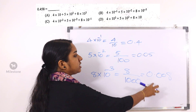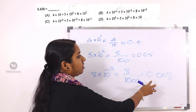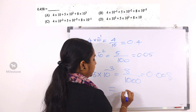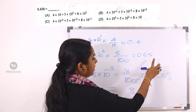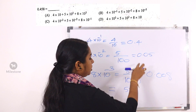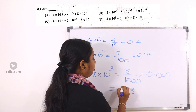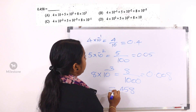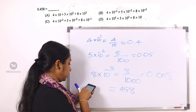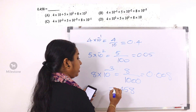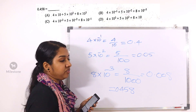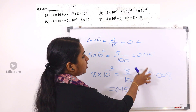How do we add these values? When we add 0.4 plus 0.05 plus 0.008, we get 0.458. Just add them together.